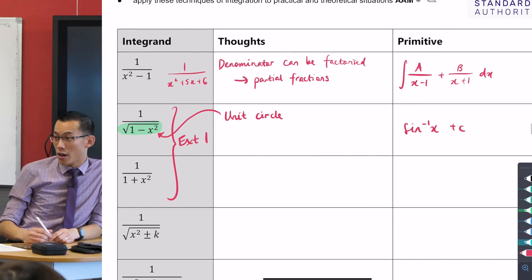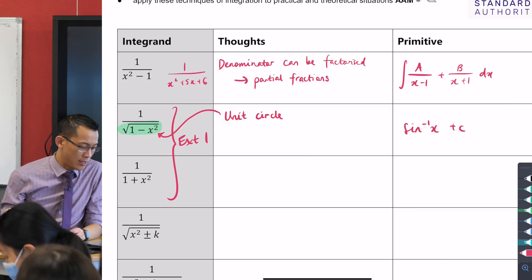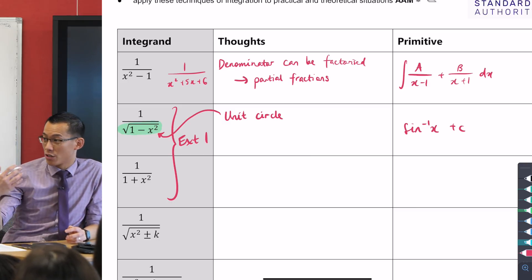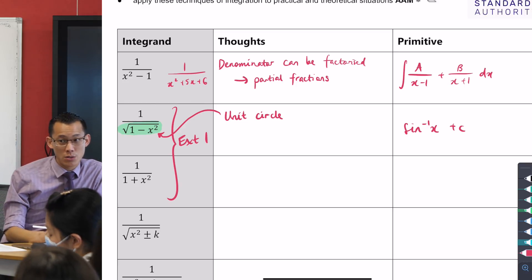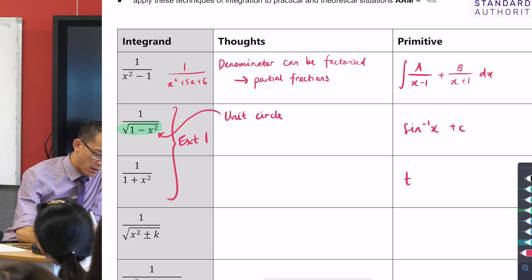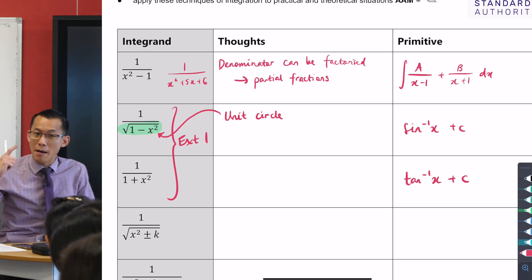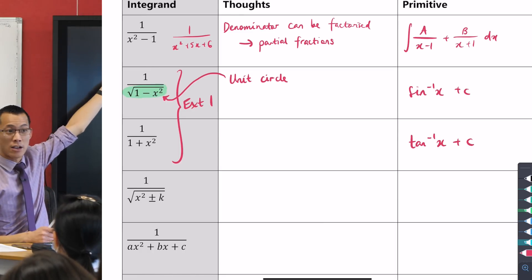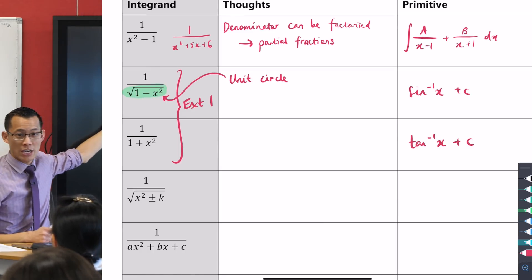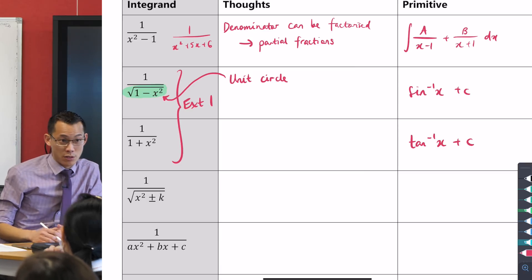When you have a look at the third one, 1 plus x squared, again, me mentioning to you that this is in the context of extension 1, that should signal to you, oh, it's the other inverse trig one, which is tan. So, we can go ahead and write on the right-hand side, it's going to be tan inverse.